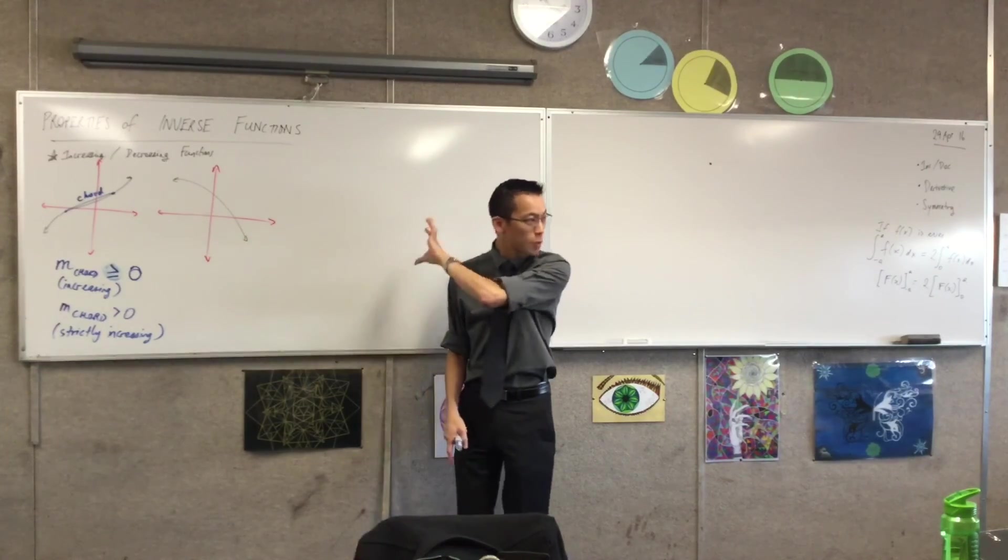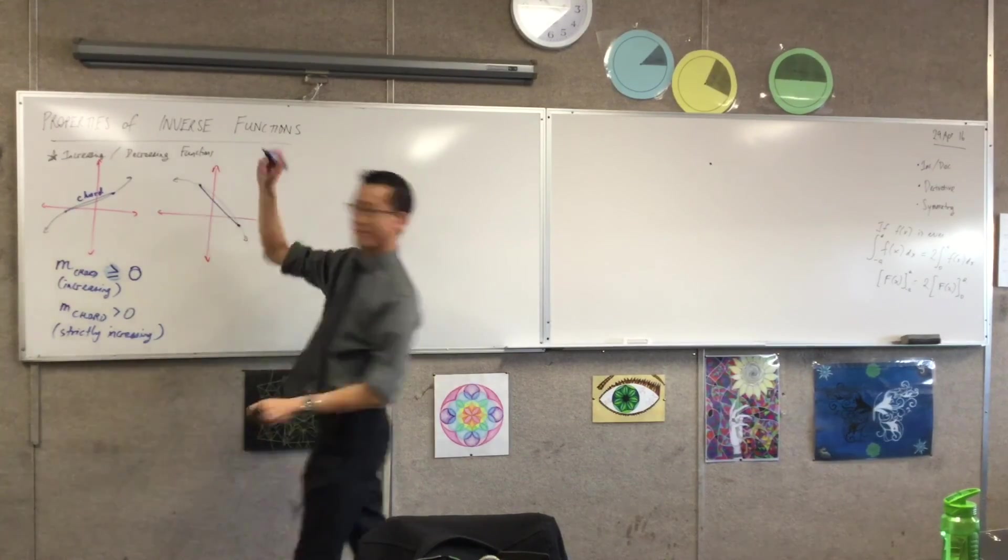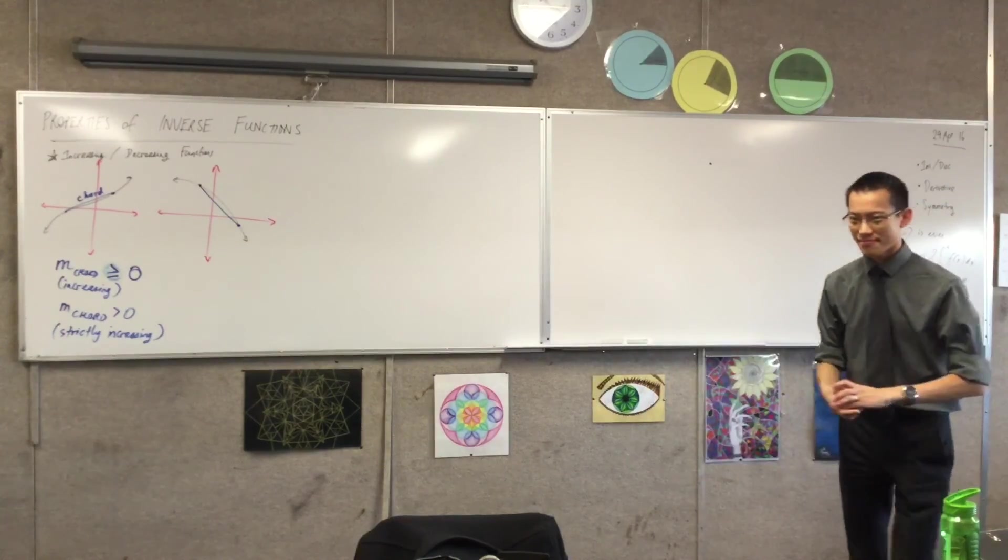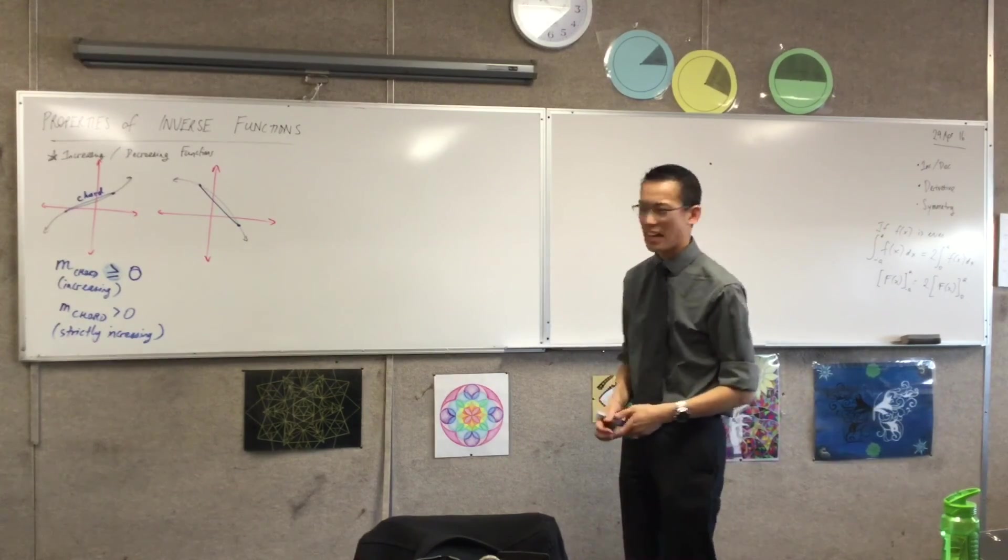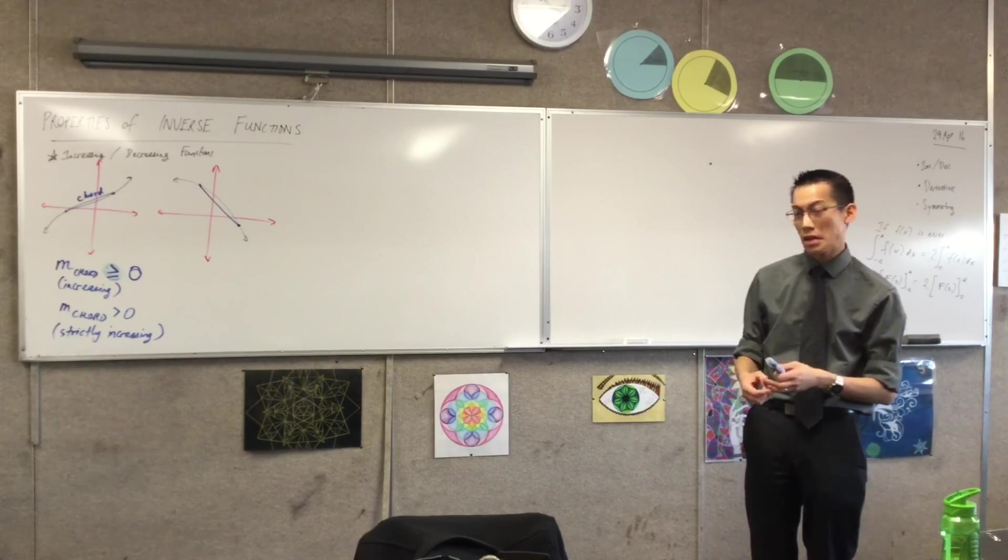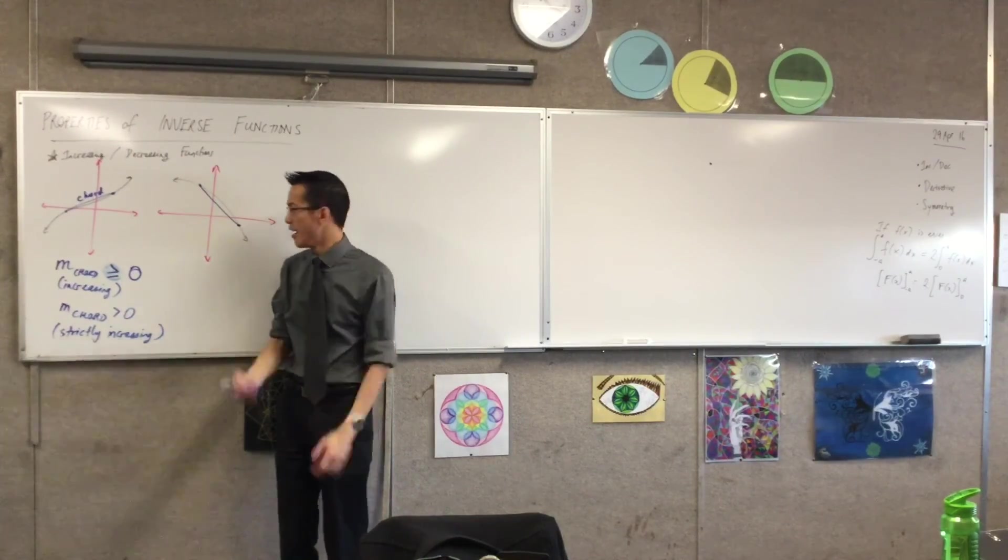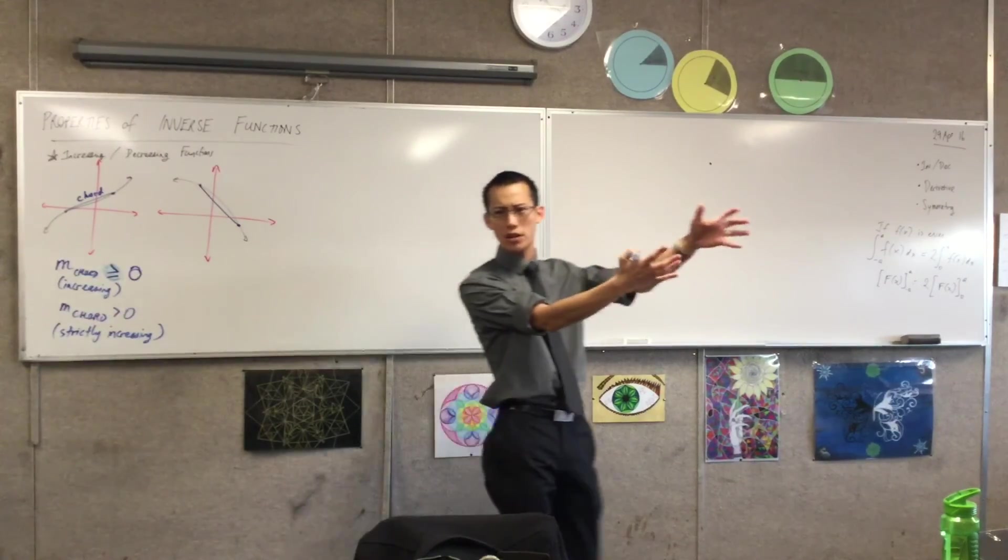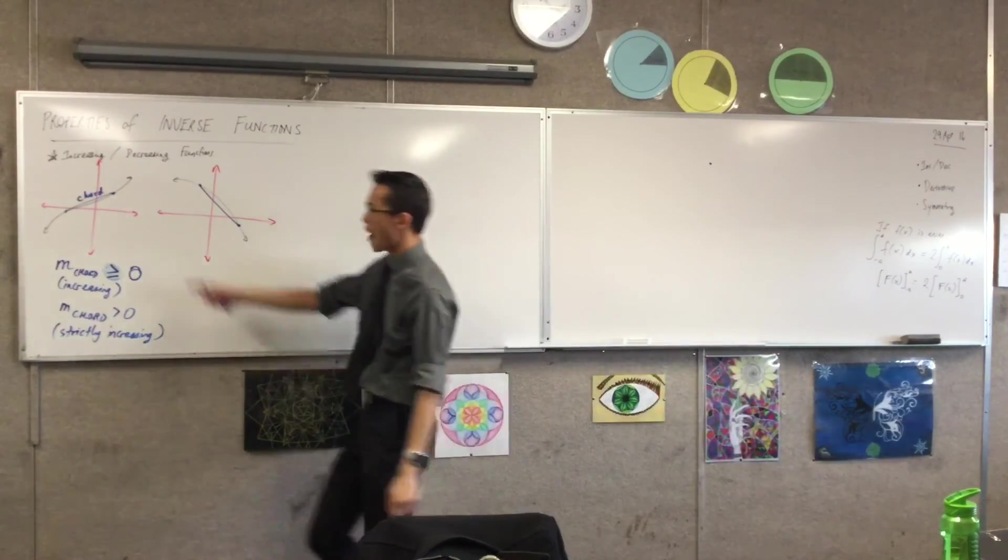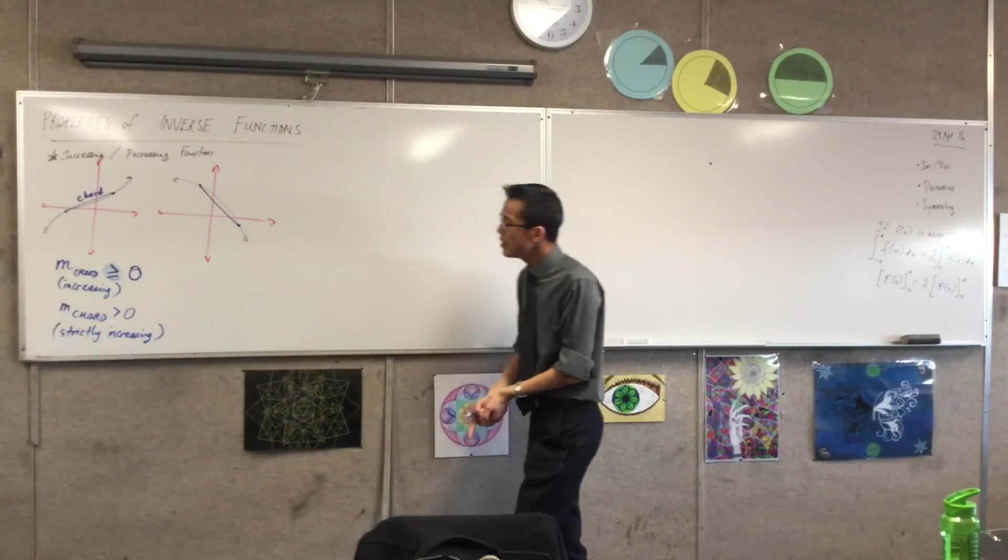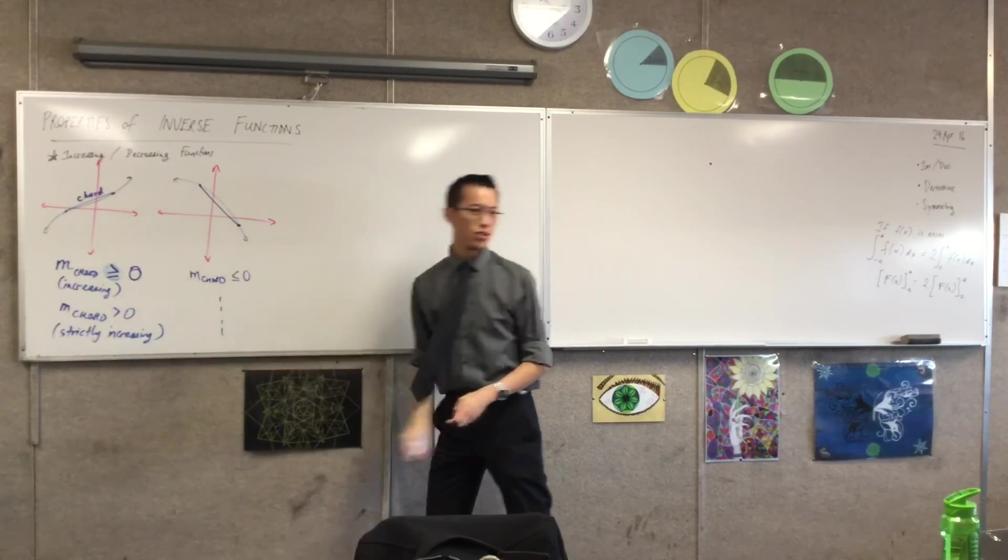But if you say no, even at a single point you have a positive gradient, your chord then becomes a tangent. We call that strictly increasing, is definitely everywhere always increasing. I guess you could make a statement about the derivative, the gradient function. Let's draw the corresponding diagram onto our decreasing function, which of course is everything but in reverse. So that's the idea that a tangent is the limiting case of a chord.